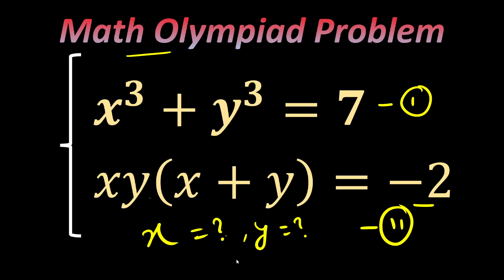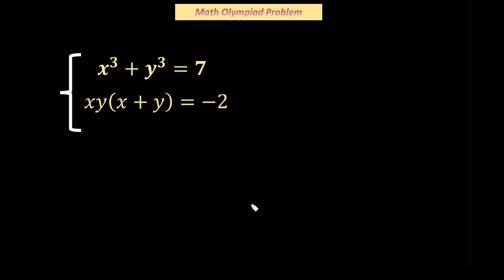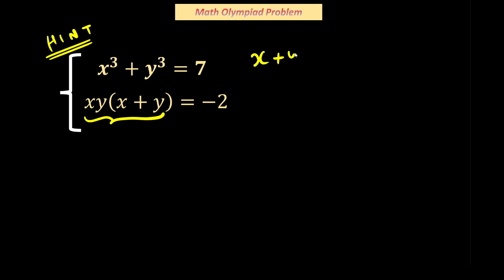Let us try to solve this question. The very first hint you should get is from the part xy(x + y). The moment you see this, you should think of a formula — a very famous algebraic identity involving cubes. We have x + y here, so if you remember, the formula is (x + y)³ = x³ + y³ ...